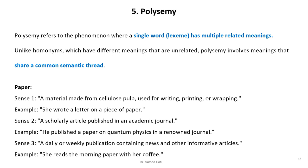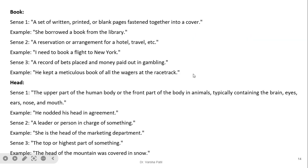Polysemy refers to the phenomenon where a single word has multiple related meanings — different senses. Unlike homonyms, which have unrelated meanings, polysemy involves meanings that share a common semantic thread. For example, the word 'paper' can mean: a material made from cellulose pulp used for writing, printing, or wrapping; a scholarly article published in an academic journal; or a daily or weekly publication containing news and other informative articles.